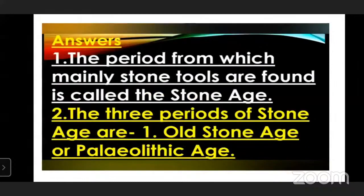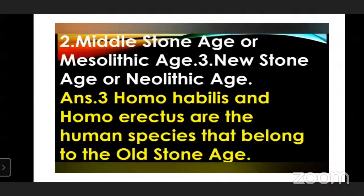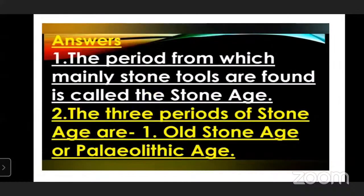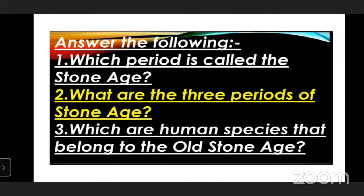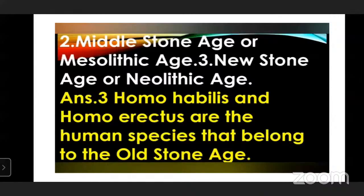Please repeat the three periods of Stone Age: Old Stone Age, Middle Stone Age, and New Stone Age. Old Stone Age means Paleolithic Age, Middle Stone Age means Mesolithic Age, and New Stone Age means Neolithic Age. Which human species belong to the Old Stone Age? Homo Habilis and Homo Erectus are the human species that belong to the Old Stone Age.